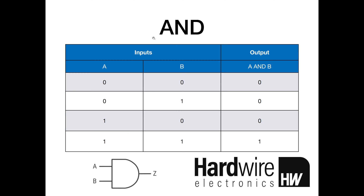This is the truth table for an AND operation. It's looking for the case when both A and B are both on or both true, and in that case the output will be on. When A is off and B is off, the output is off. When A is off and B is on, the output is off. When A is on and B is off, the output is off. For an AND operation, the only time the output is on is when both A and B are both high.